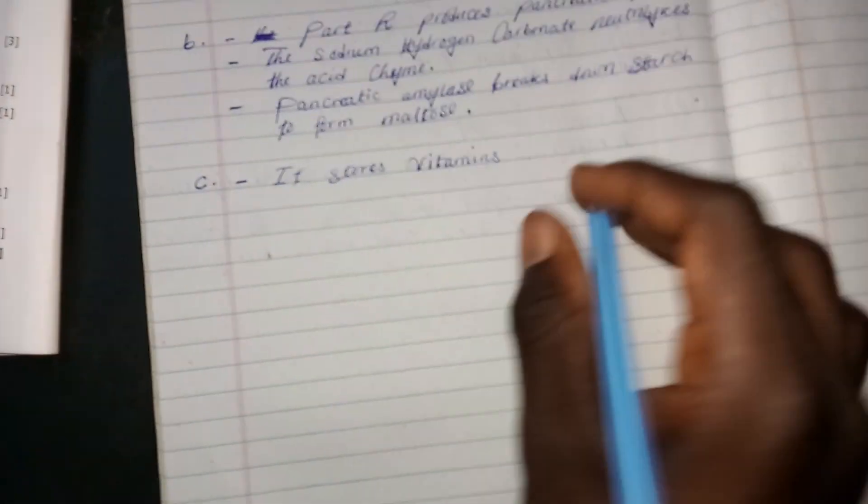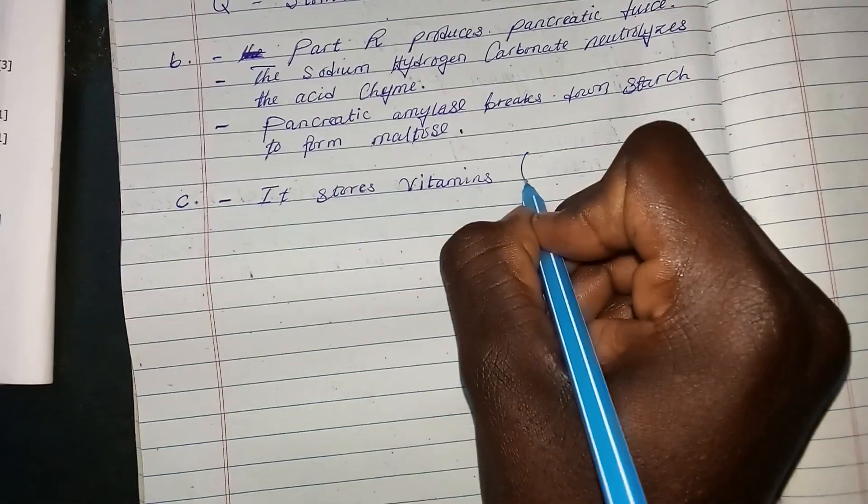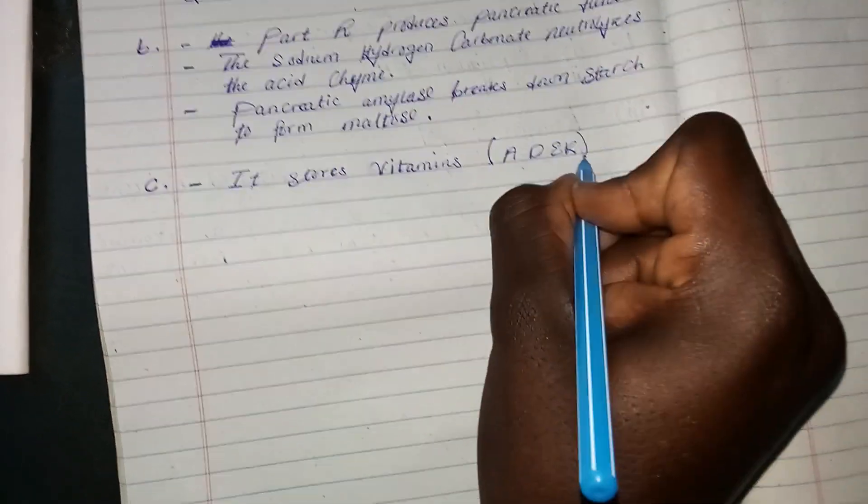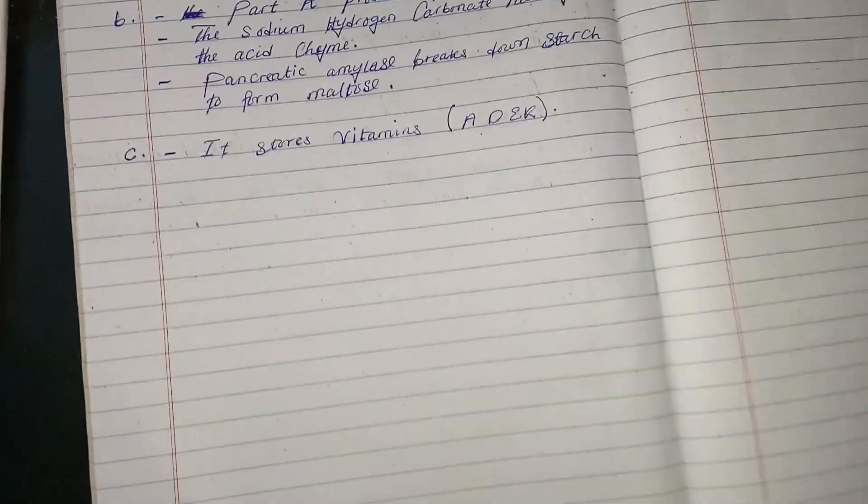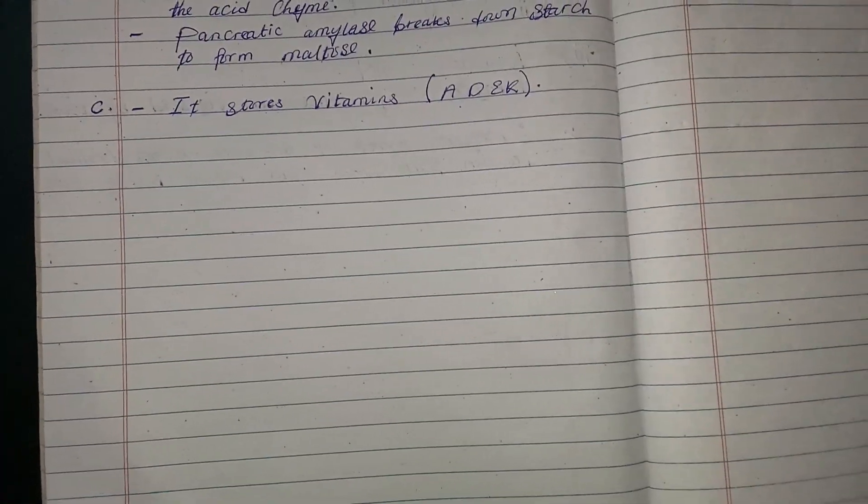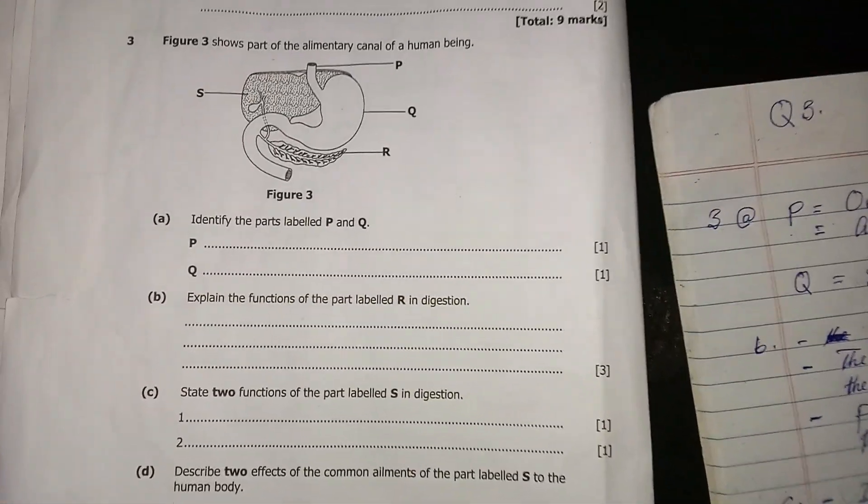It stores vitamins ADEK in brackets. So ADEK is just vitamin A, vitamin D, vitamin E, and vitamin K are stored in the part labeled S, which is the liver.